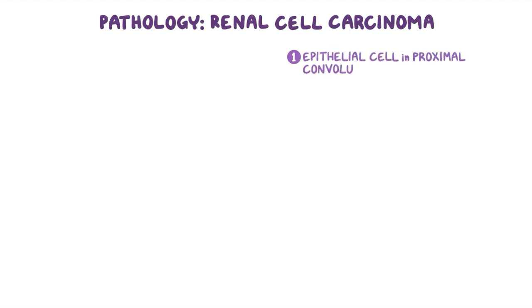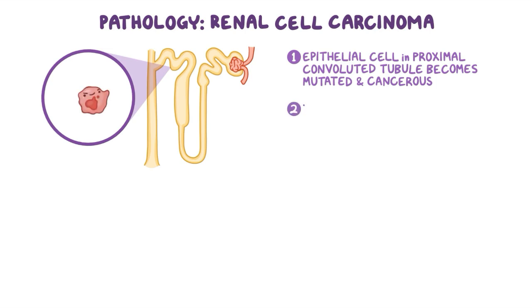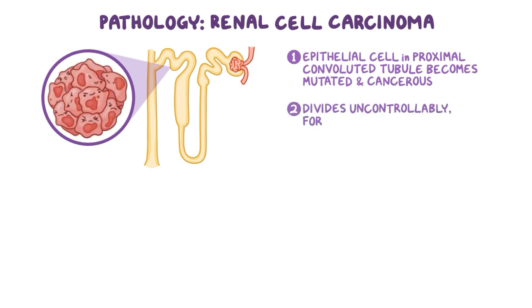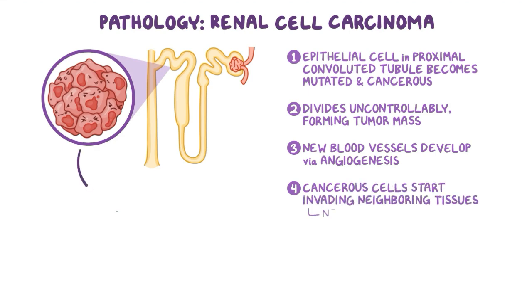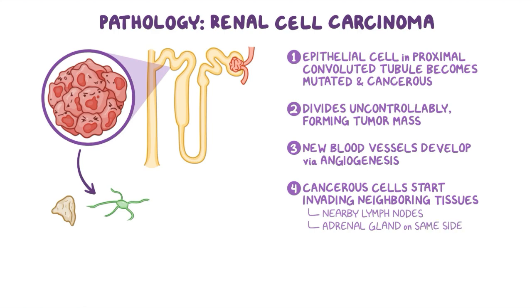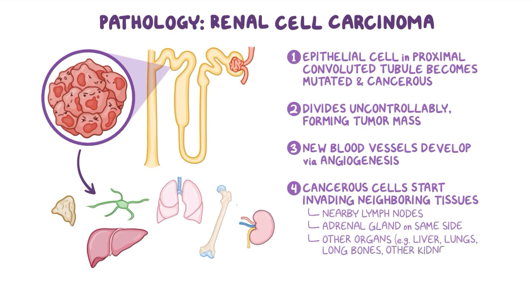The most common type of renal cancer is renal cell carcinoma, which occurs when an epithelial cell in the proximal convoluted tubule of the kidney becomes mutated and cancerous, and begins dividing uncontrollably, forming a tumor mass. As the tumor keeps growing, new blood vessels also develop via angiogenesis to supply it. Eventually, cancerous cells start invading neighboring tissues and can spread to nearby lymph nodes or the adrenal gland on the same side, or even metastasize to other organs like the liver, lungs, long bones, or to the other kidney.